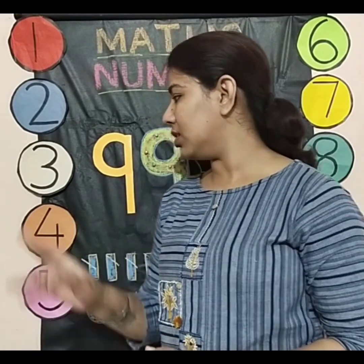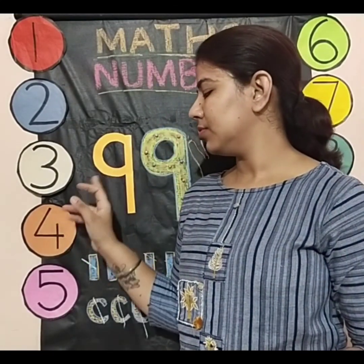So students, now you are able to know about number 9 — its formation: standing line and curve, and counting the objects of number 9. See you in the next session. Till then, bye.